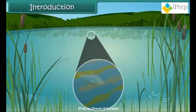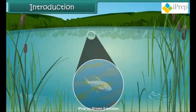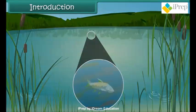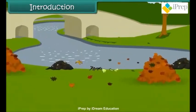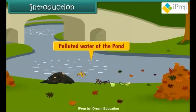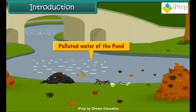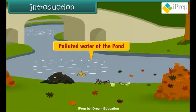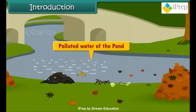Introduction: The fishes and other aquatic animals in the pond were dying because people dumped their garbage in the pond. In this lesson we will learn about garbage, its sources, and its harmful effects on us and other animals.